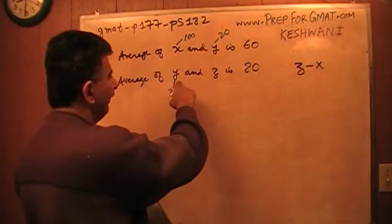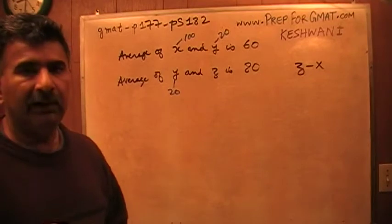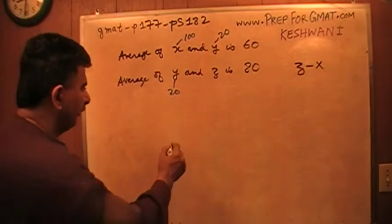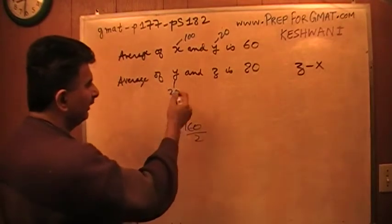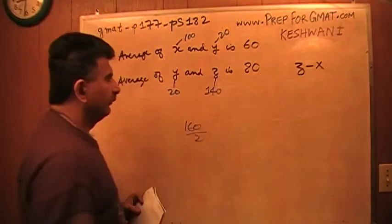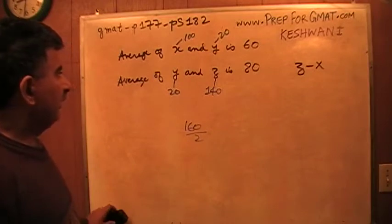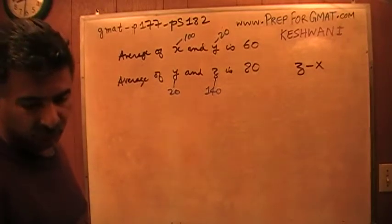And I'm told that the average of Y and Z is 80. If the average of two numbers is 80, they have to add up to 160. That's the only way you're going to get the average of 80, because 160 divided by 2 is going to give you 80. And my Y is already 20, which means Z would have to be 140. So how many variables did I plug in here for? There are three variables. How many variables did I plug in the value for? The answer is two.